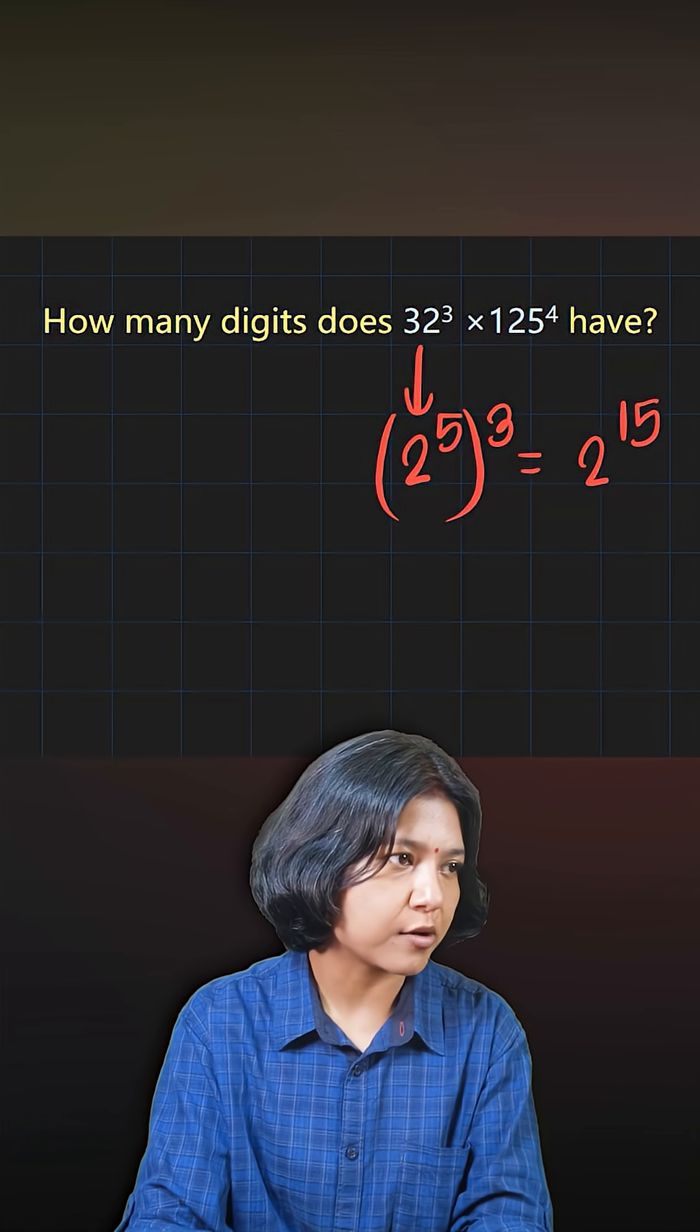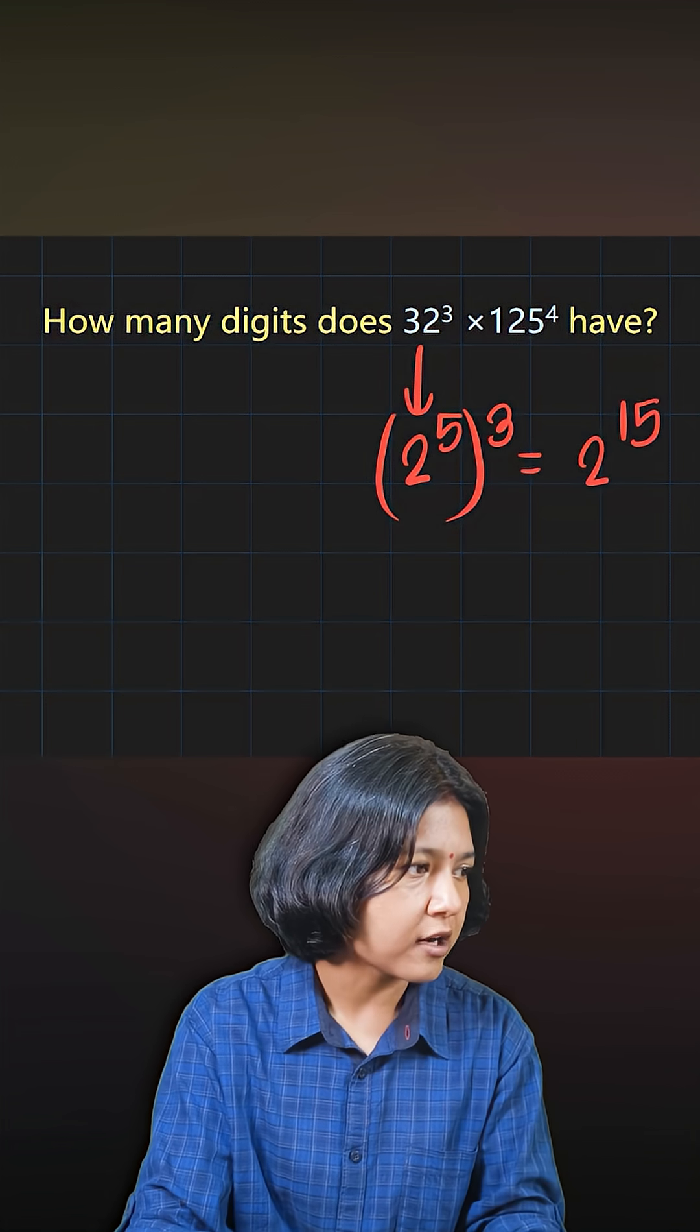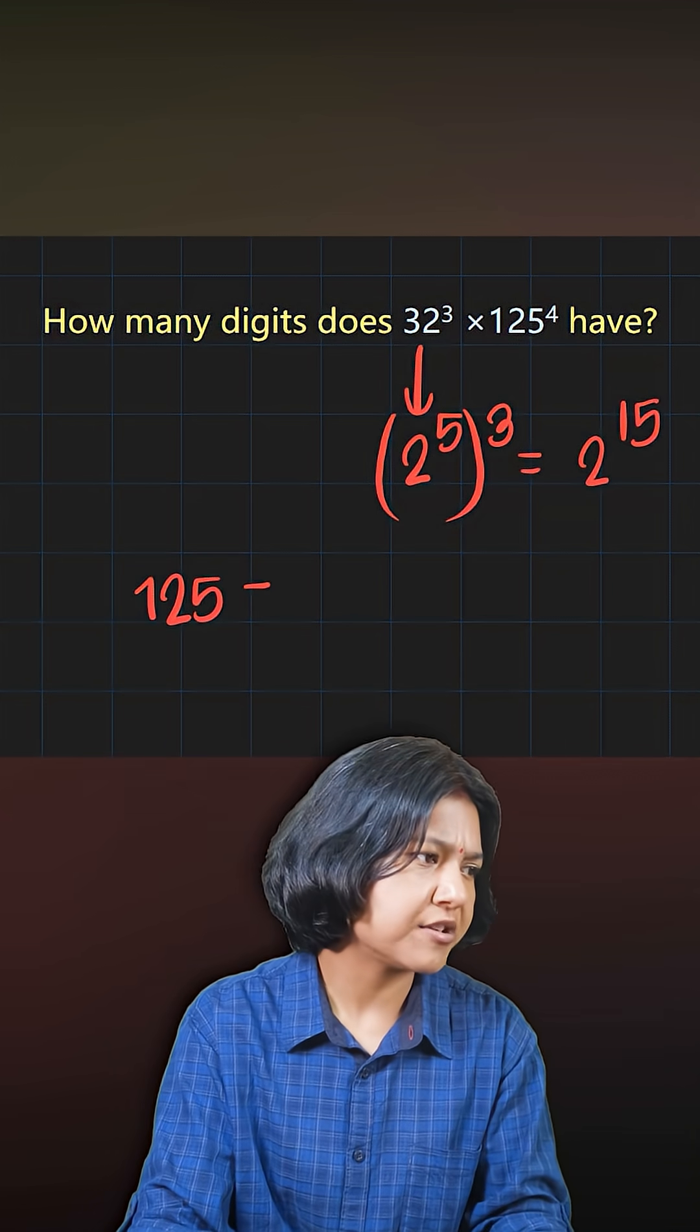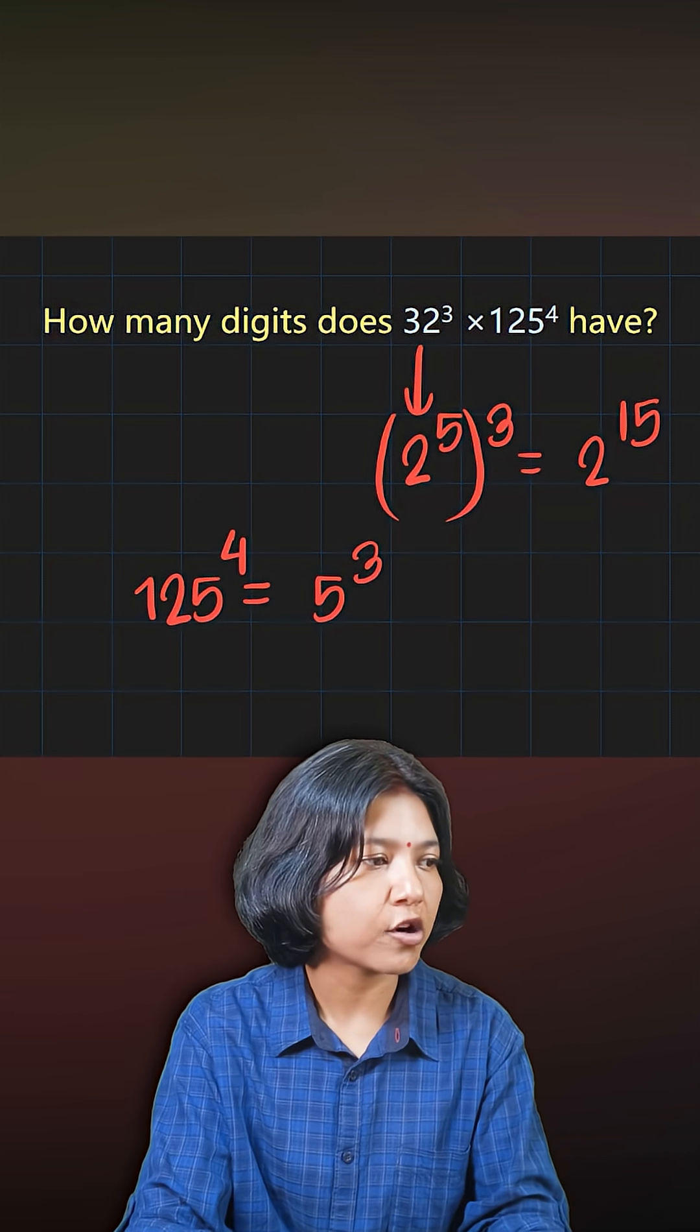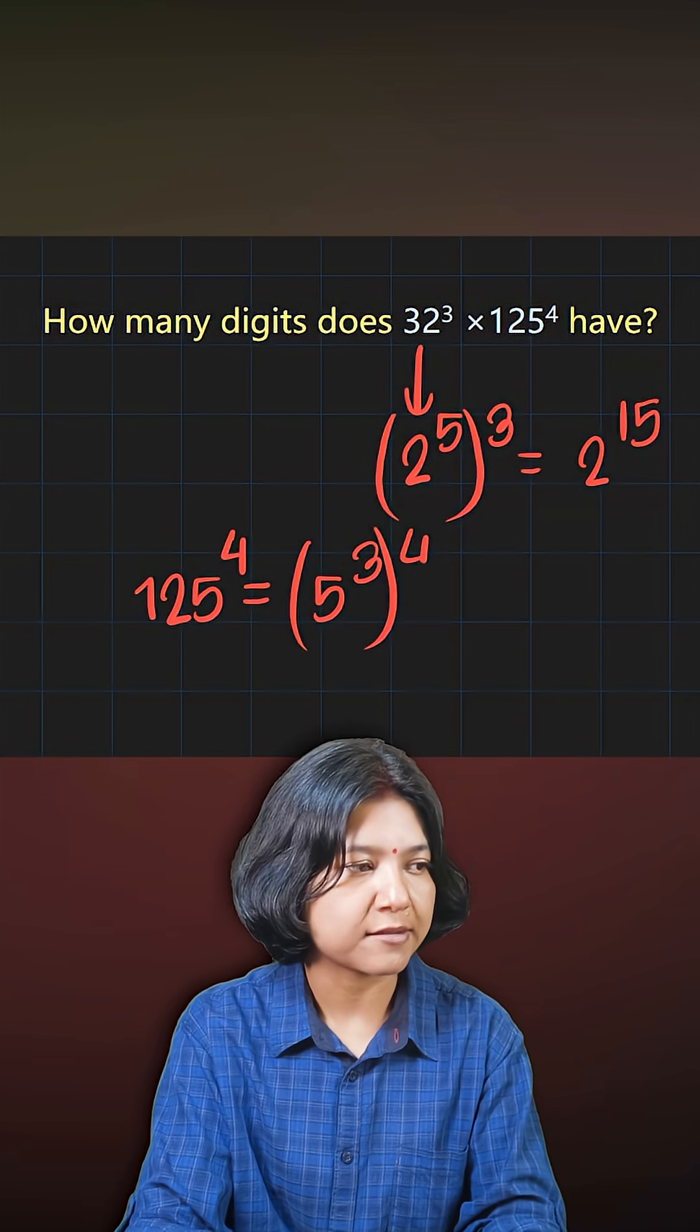If you look at the next number 125 to the power of 4, now 125 similarly can be written as the third power of 5. Therefore, 125 to the power of 4 basically means I have to multiply the powers together.